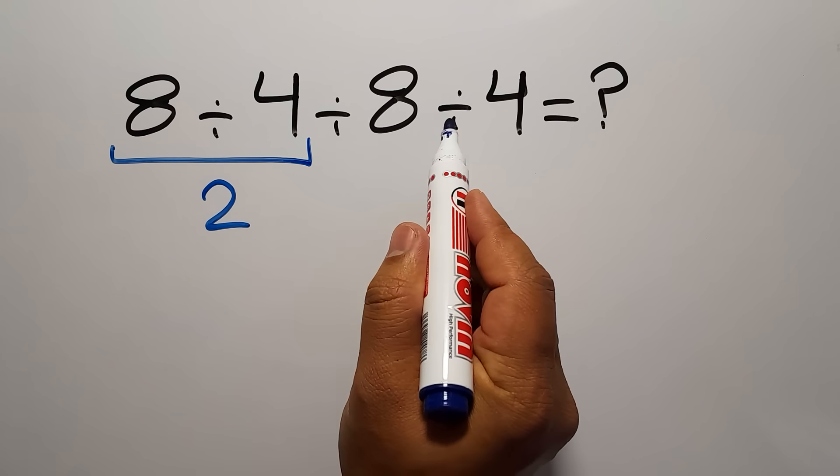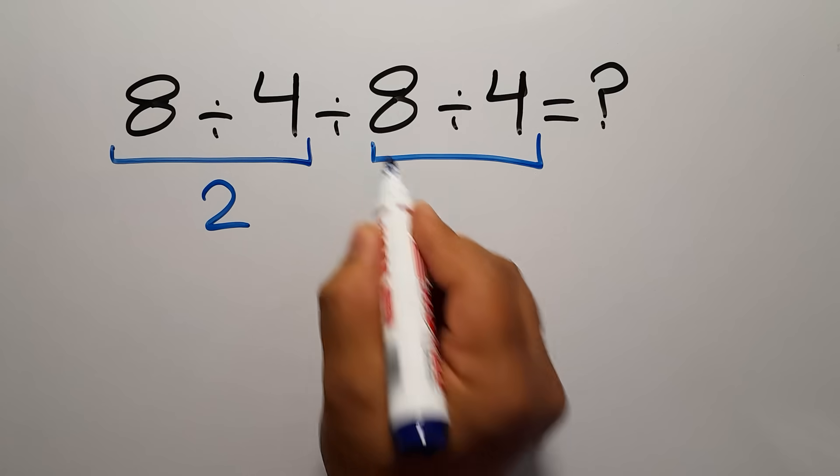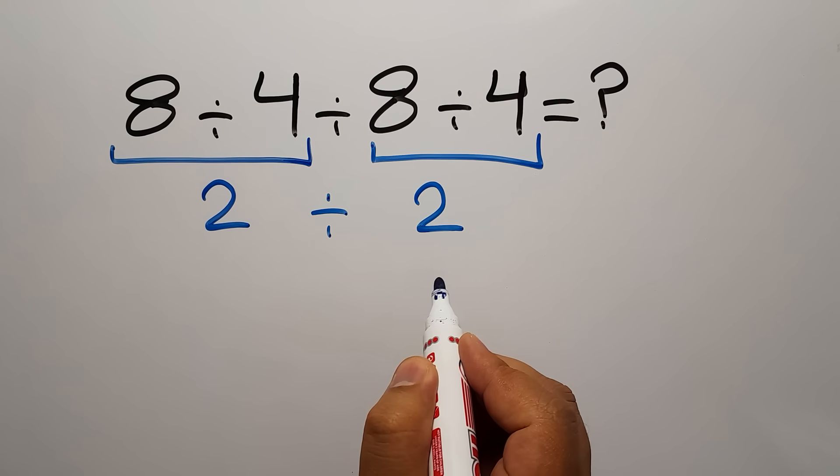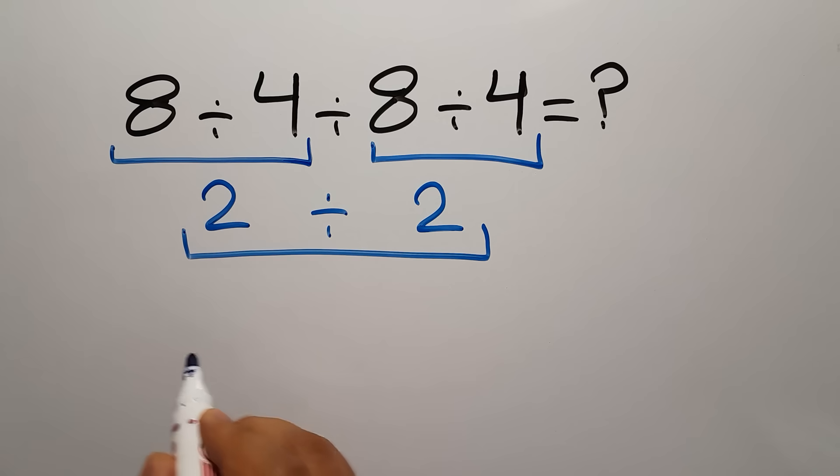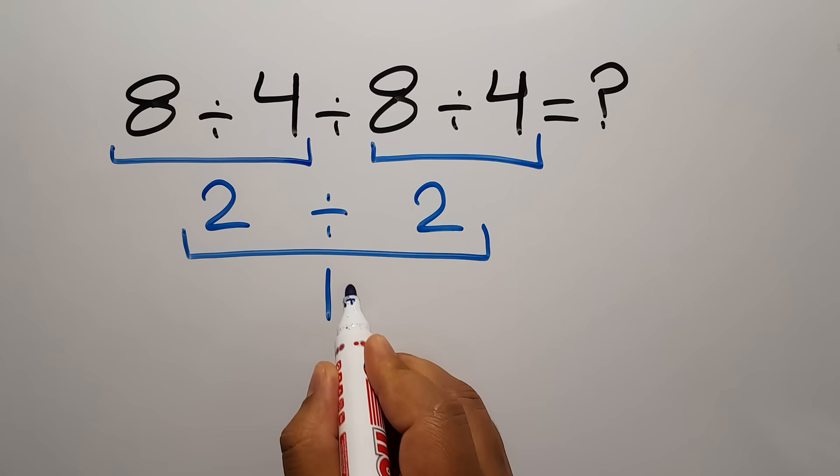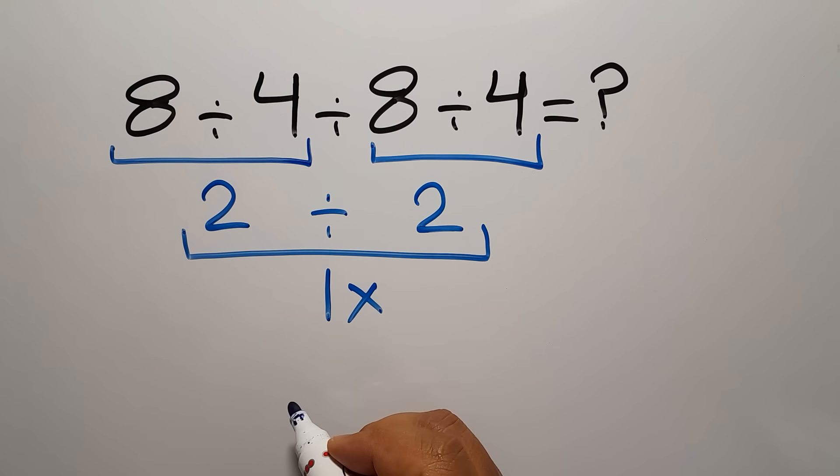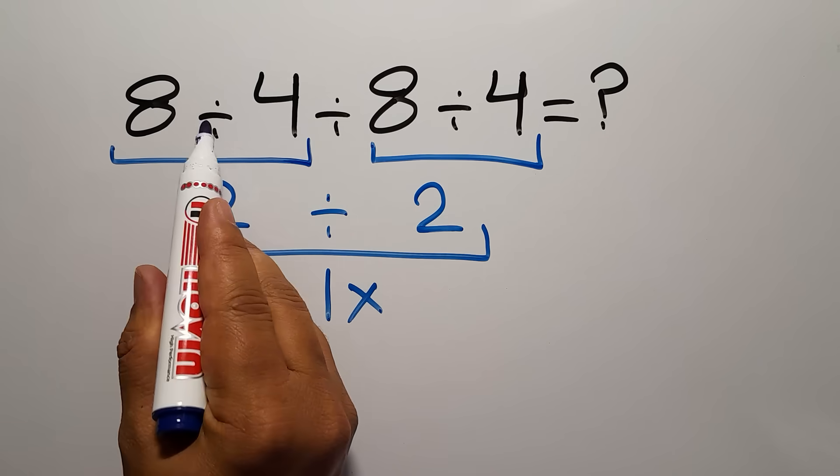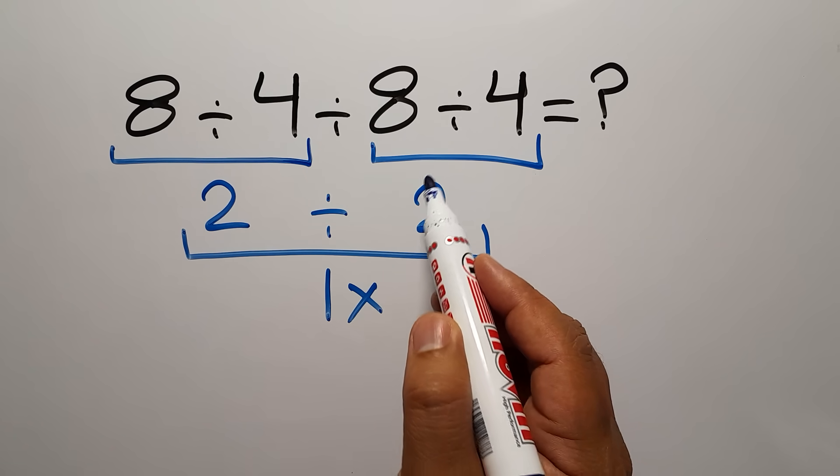Again, we have 8 divided by 4, which equals 2. So 2 divided by 2 and 2 divided by 2 gives us 1. But this answer is not correct because in this expression we have three divisions, and as we know...